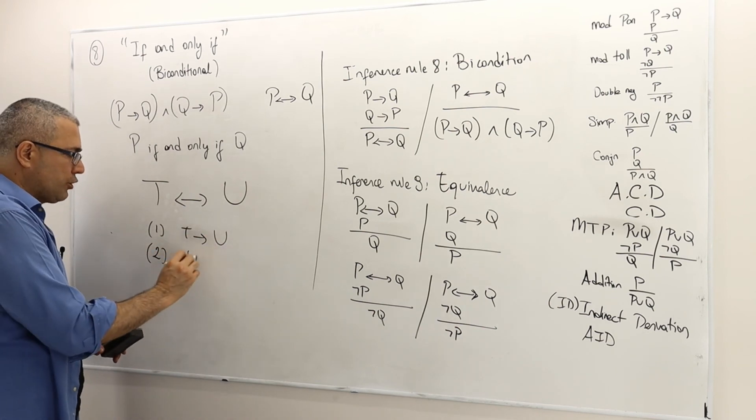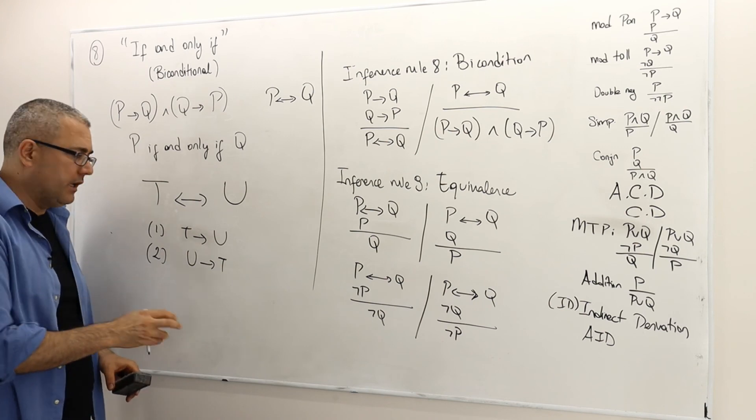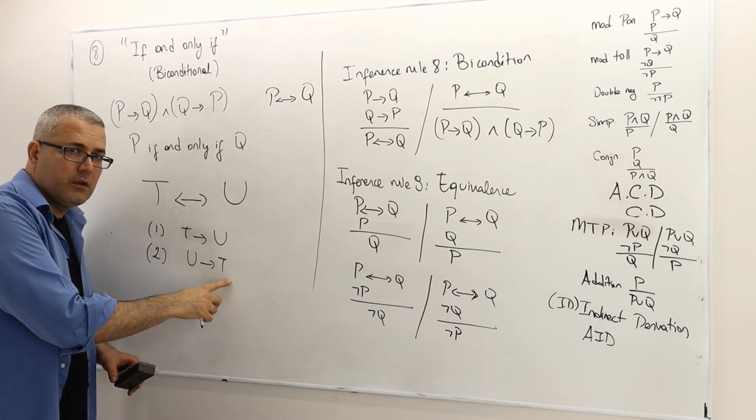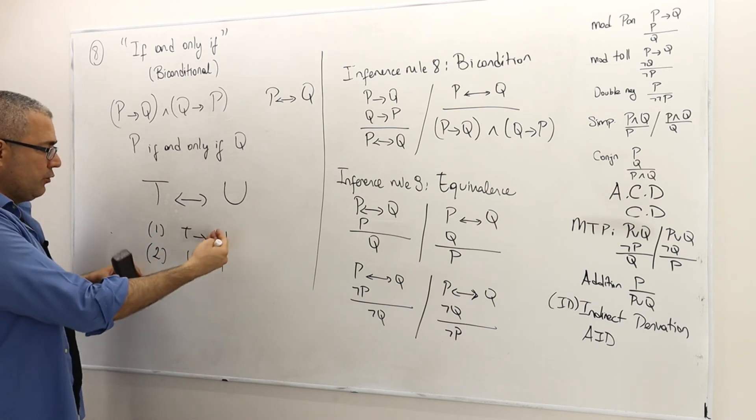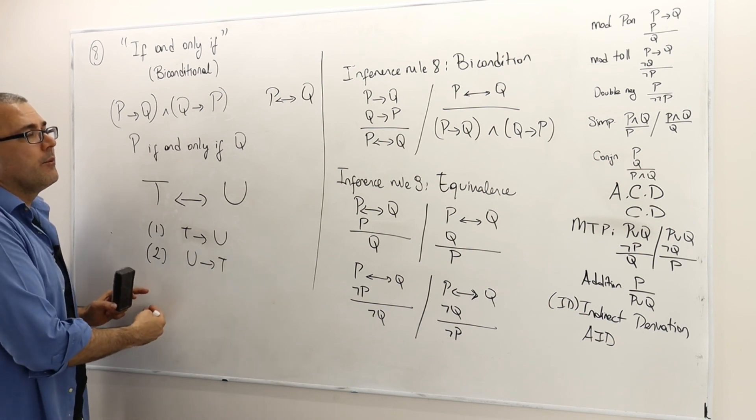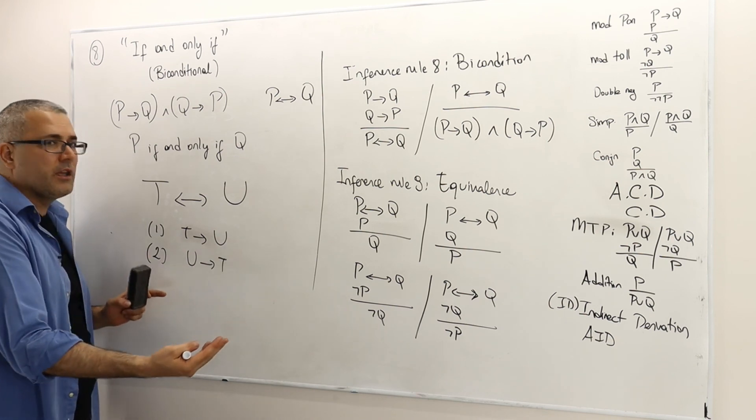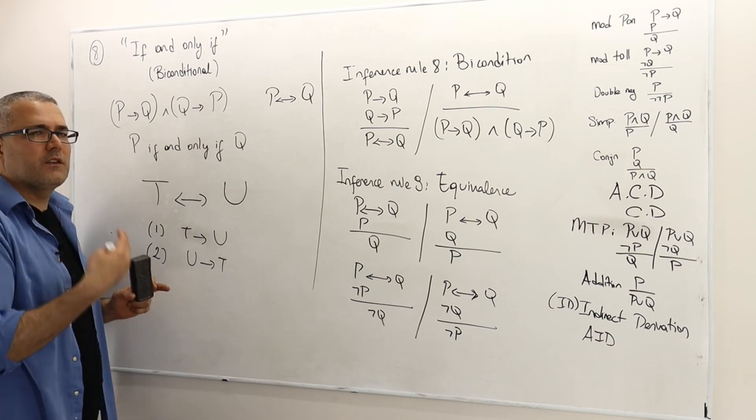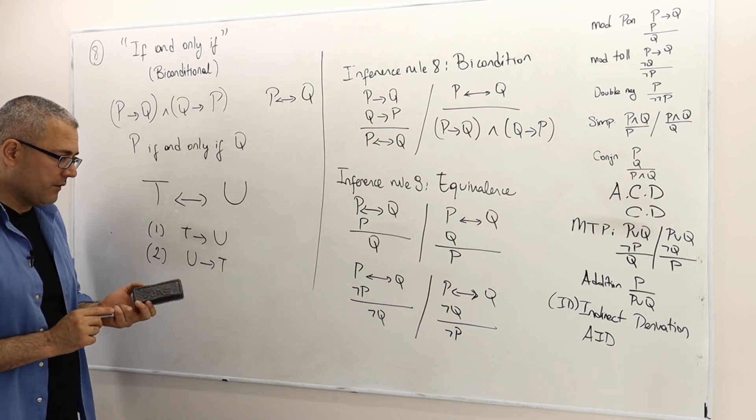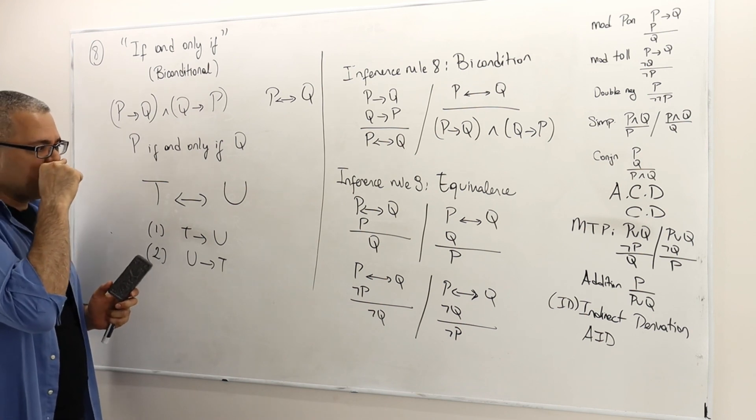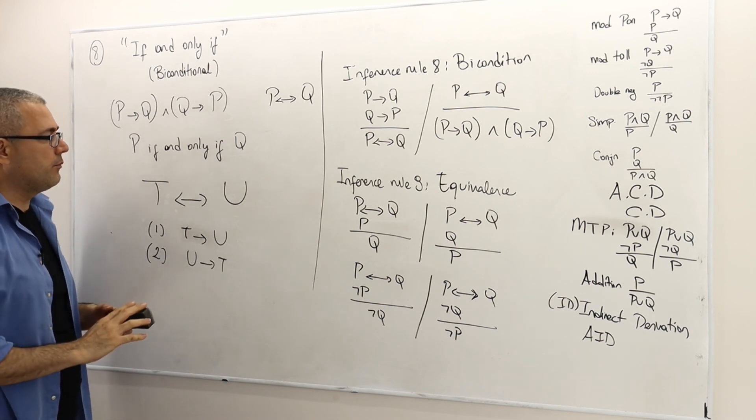And once you prove one and two, by using the biconditional property of line one and two, voila, you have t if and only if u. So this is how we prove the if and only if statements. So it's longer than a conditional derivation, for example.